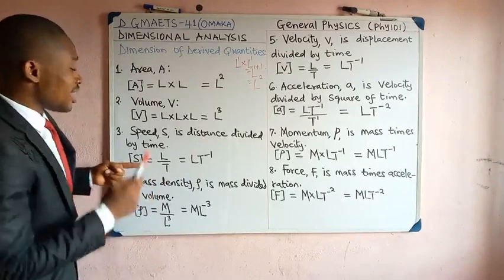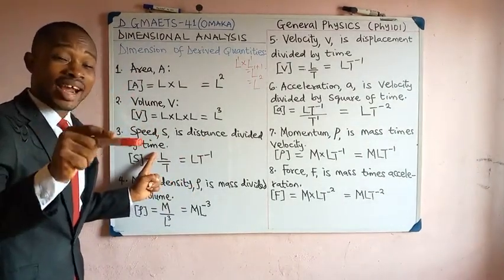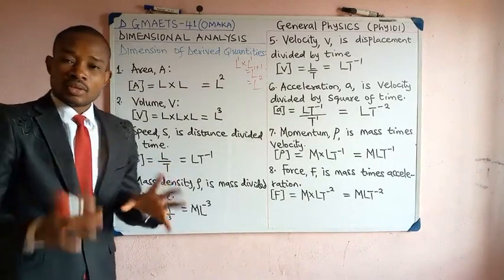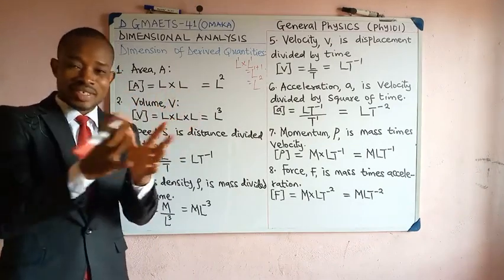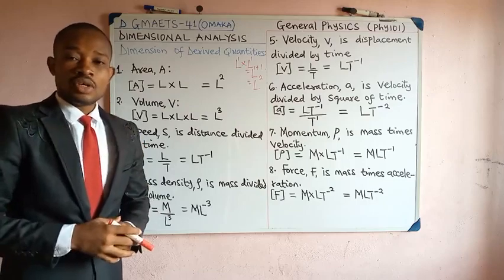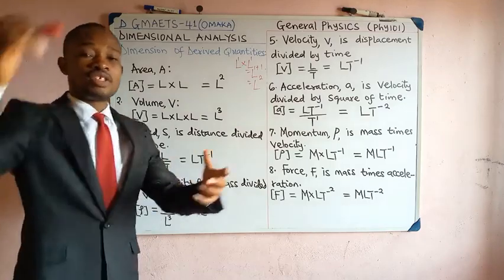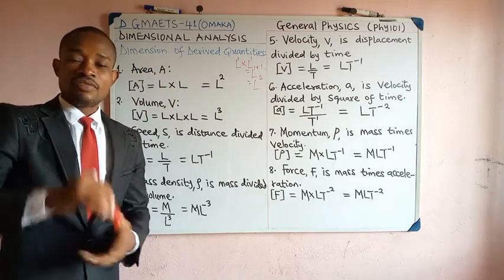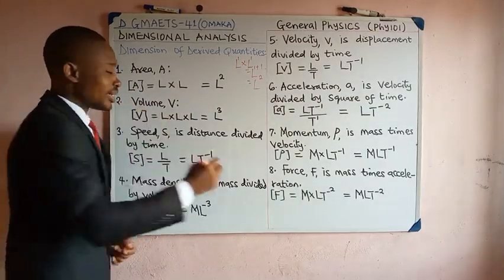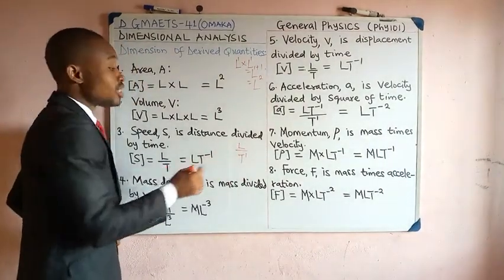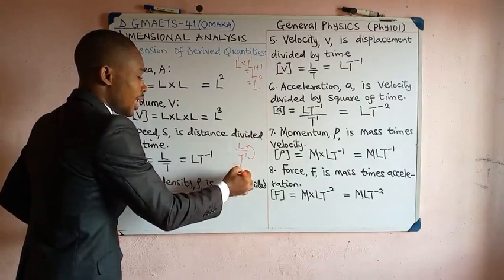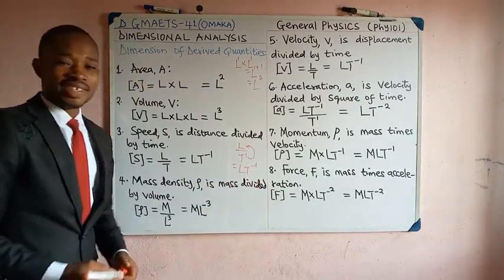Speed is distance divided by time, so its dimension is L divided by T raised to power 1. When a denominator term is taken upward, the sign of its power changes — positive becomes negative. So L/T¹ becomes LT⁻¹. That is the dimension of speed.